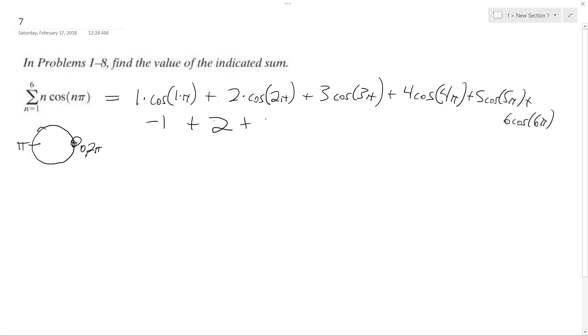So 3 times negative 1. So it's negative 3 plus 4 pi. So this ends up being 4 because it's 2 times around the unit circle. So again, it's cosine of 0, which is equal to 1.